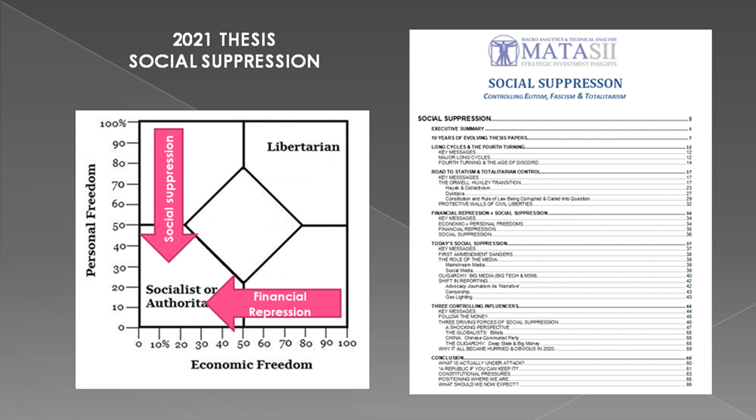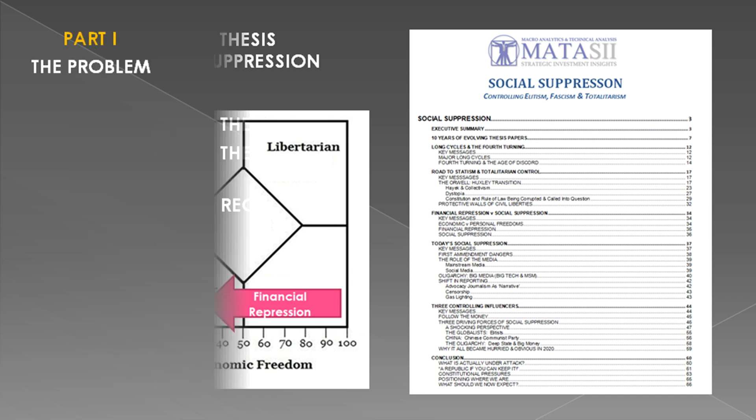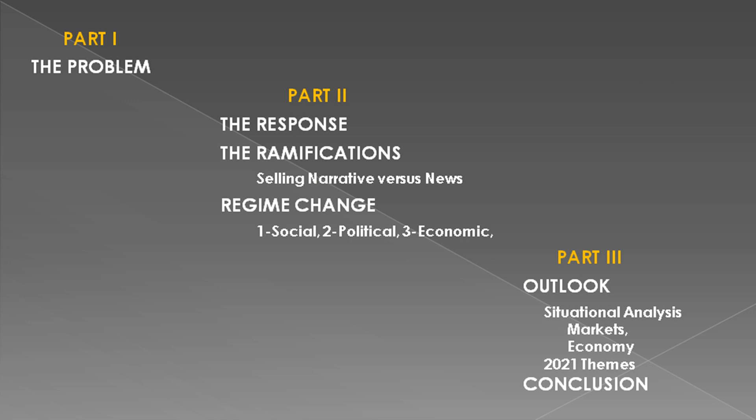We have just issued our annual thesis paper entitled 'Social Suppression.' It brings together a lot of prior thesis papers which point to clear dislocations and turmoil ahead. We need to outline not so much our conclusions, but rather a large number of critical elements that need to be fully appreciated. There are sufficient areas to discuss that we have been forced to break this into three parts — over 100 slides. In this session we'll tackle Part 1: the central problems facing the global macro most likely to impact your policy strategies and positioning this year.